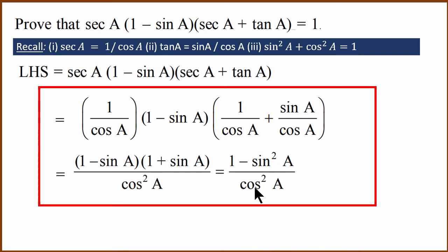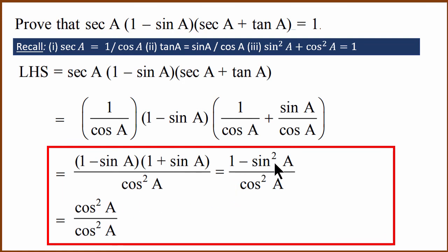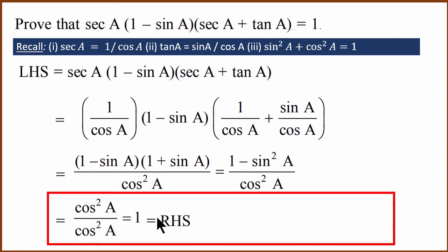Now, 1 minus sin squared A can be replaced with cos squared A, using the identity sin squared A plus cos squared A equals 1. So we get cos squared A divided by cos squared A, which equals 1 — the right-hand side. In this way, we have proved that left-hand side equals right-hand side, using the definitions of secant and tan and the Pythagorean identity.